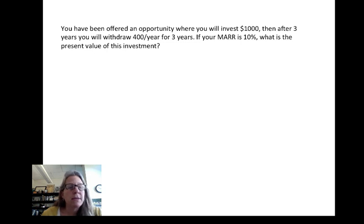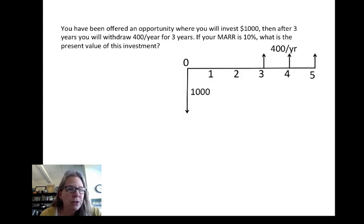This example problem is you've been offered an opportunity where you invest $1,000. Then after three years, you will withdraw $400 a year for three years. If your MARR, which is your minimum attractive rate of return, the interest rate you're going to use is 10%, what is the present value of this investment? So the first thing I always do is draw a cash flow diagram, especially when they're complex like this. So you understand, we made a $1,000 investment now, then I waited three years, one, two, three, and then I started withdrawing $400 a year for an additional three years. So that's what it looks like.